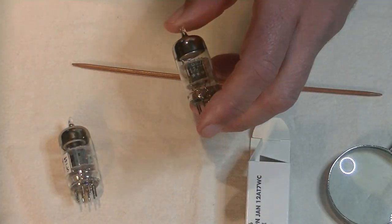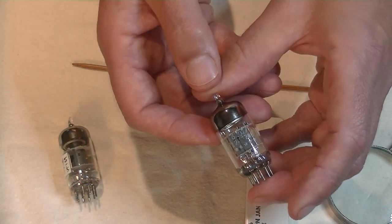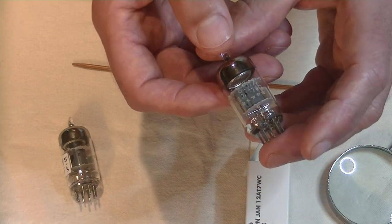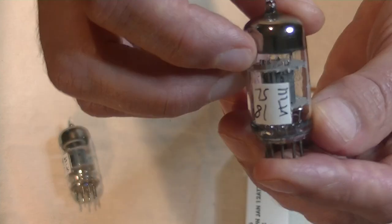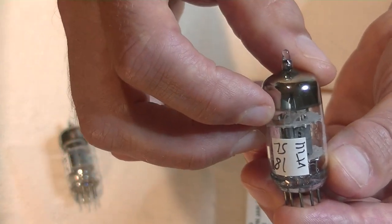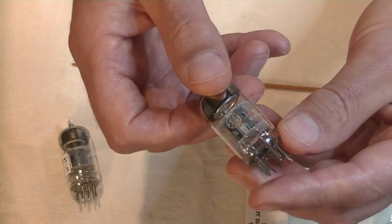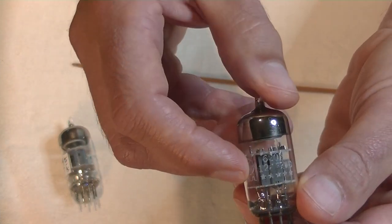Next, we've got the GE 12AT7WB, or 6201, and you can, let's see if you can see it, folks. It's acid etched right here on the top near the shoulder. And there we go.